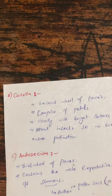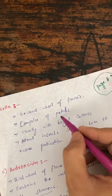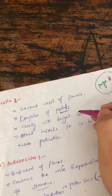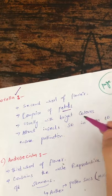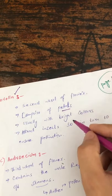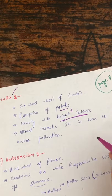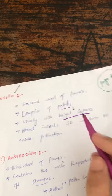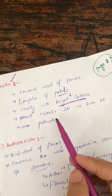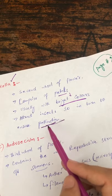The second wall or ring is the corolla. The corolla is the second wall of the flower, which comprises of petals. Remember that petals are brightly colored. These bright colors attract insects, which in turn ensures cross-pollination.